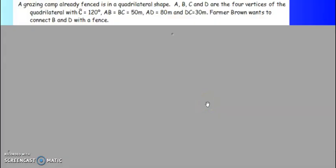Our problem is given as an instruction. A grazing camp already fenced is in a quadrilateral shape. A, B, C, D are the four vertices of the quadrilateral with angle C equal to 120 degrees.